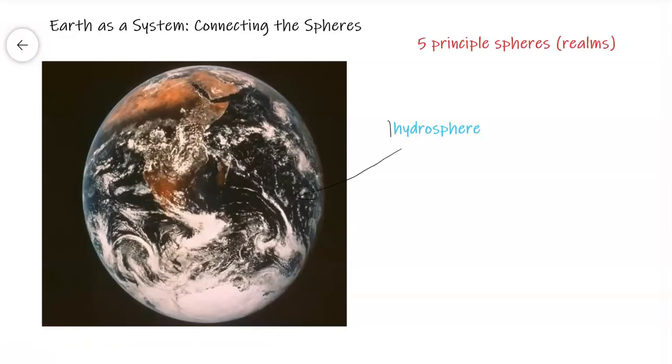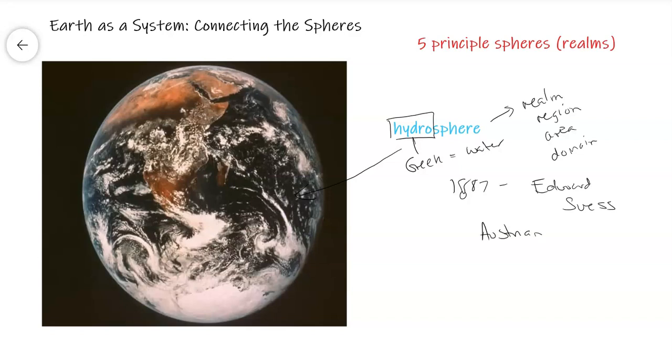Hydrosphere. Hydro, this part of the root of the word, is Greek for water. The word sphere just means the realm or the region or the encompassing area or domain of water. A lot of these words derived from ancient Greek origins. The hydrosphere was first discussed or coined as a term around 1887 by a gentleman called Edward Seuss. He was an Austrian geologist who coined the term during an article or piece of literature based on the Alps in Europe.